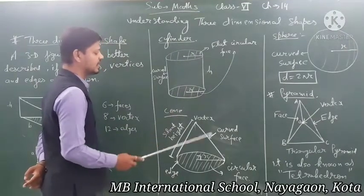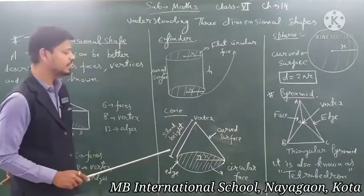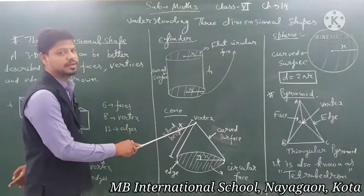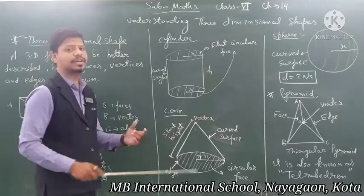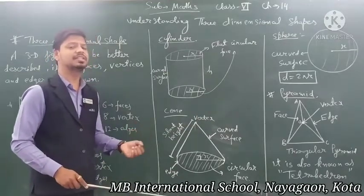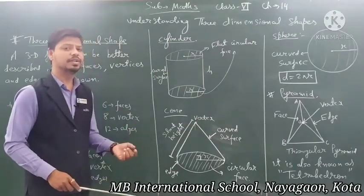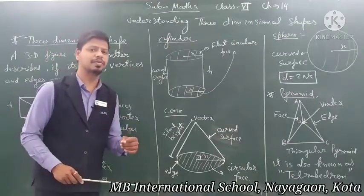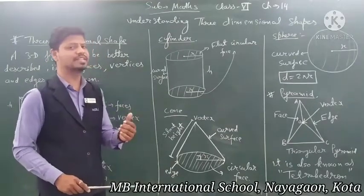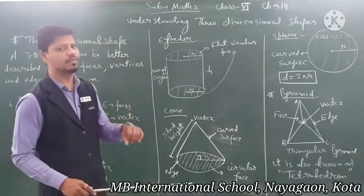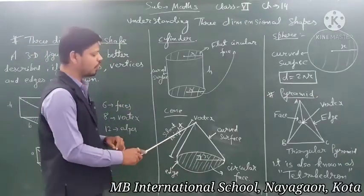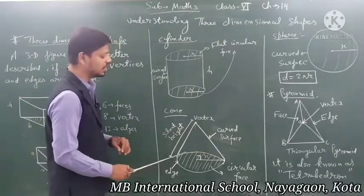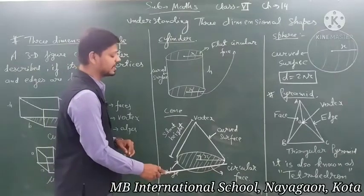After that, a cone. A cone is like a birthday cap used when celebrating birthdays. Another example is a cone-shaped ice cream. A cone has a circular face at the bottom — a circle is drawn at the base as the circular face.